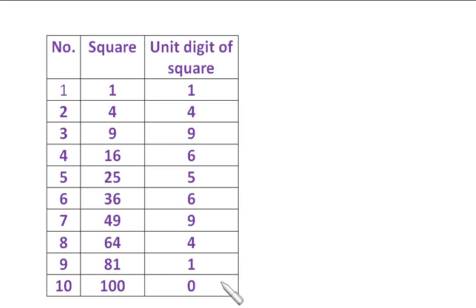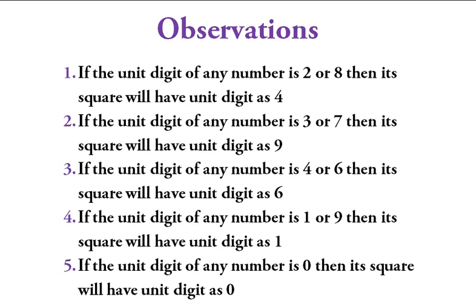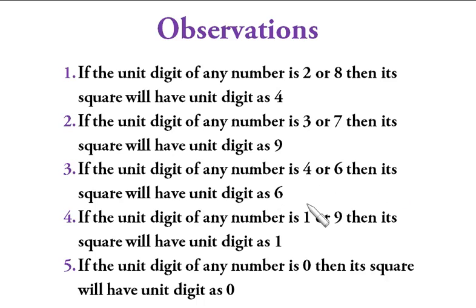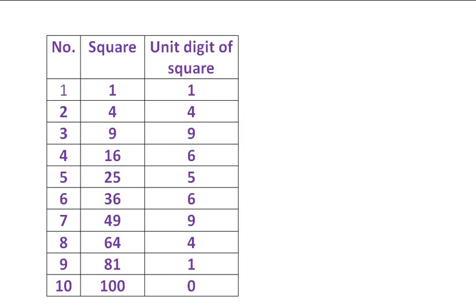Key observations: if the unit digit of any number is 2 or 8, its square will have unit digit 4. If the unit digit is 3 or 7, its square will have unit digit 9. If the unit digit is 4 or 6, its square will have unit digit 6. If the unit digit is 9, its square will have unit digit 9. If the unit digit is 0, its square will have unit digit 0.